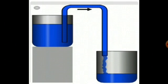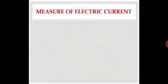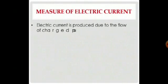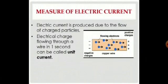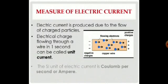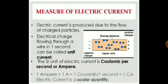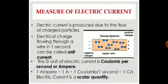How can we measure water flowing from a pipe? We can find it from the amount of water in liters coming out in a specific time period. How then is current electricity measured? Electric current is produced due to the flow of charged particles. Electrical charge flowing through a wire in one second can be called unit current. The SI unit of electric current is coulomb per second, also called ampere. 1 ampere (1A) = 1 coulomb per second (1 C/s). Electric current is a scalar quantity.